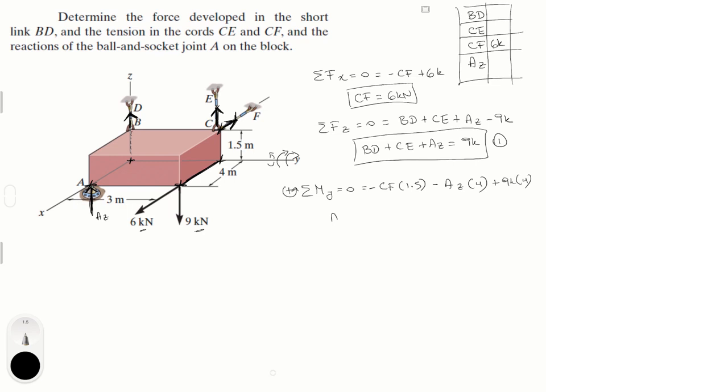So if we solve for AZ, we get that AZ is equal to 9 times 4 minus CF times 1.5 all over 4. Why did we solve for AZ? Because there's two variables in this equation and we already have one of them, which is CF. We found it right here. So we're going to plug that in. We solve for AZ and then we plug CF in and you're going to get that AZ is equal to 6.75 kN. We write it on our nice little chart.